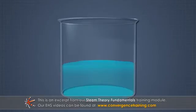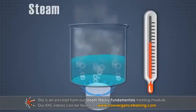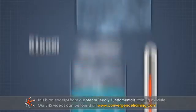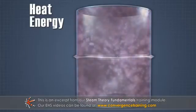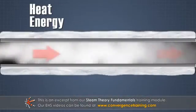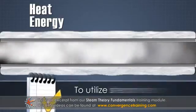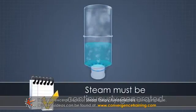Steam is an invisible gas that is generated by heating liquid water to its boiling point or saturation temperature, at which point it begins to boil. The heat energy used to convert liquid water to steam is then contained within the steam, so the steam can be used to carry and transfer heat energy to other locations. To utilize this function of steam on a continuous basis, steam must be continuously generated.